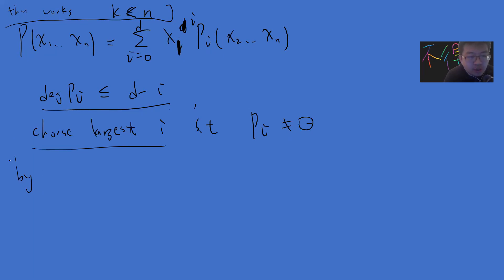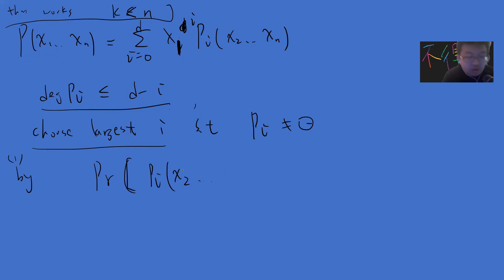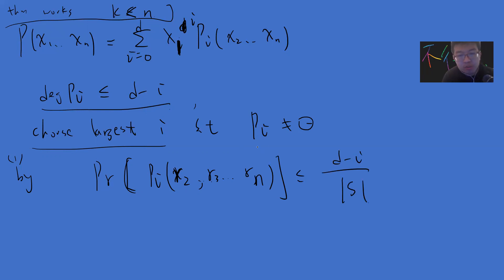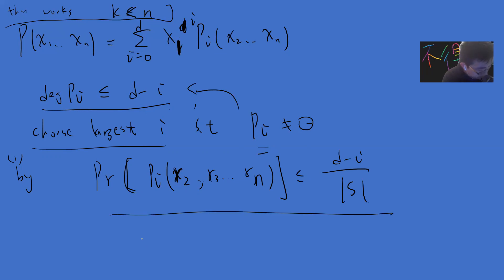By induction, since P_i(x2, ..., xn) is a polynomial in n − 1 variables with degree d − i, the probability that P_i(r2, ..., rn) = 0 is at most (d − i) / |S|. This is the induction step applied to P_i.